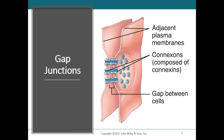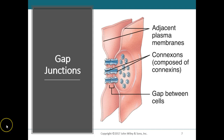Gap junctions allow cells in a tissue to communicate rapidly through little holes called connections — little channels that run from one cell to another, allowing ions and other things to cross. These are very important in cardiac muscle tissue. Not all cells are part of the pacemaking machinery; some are auto-rhythmic cells that depolarize and trigger contraction. Gap junctions allow ions to flow from cell to cell so all the muscles can contract as a unit.